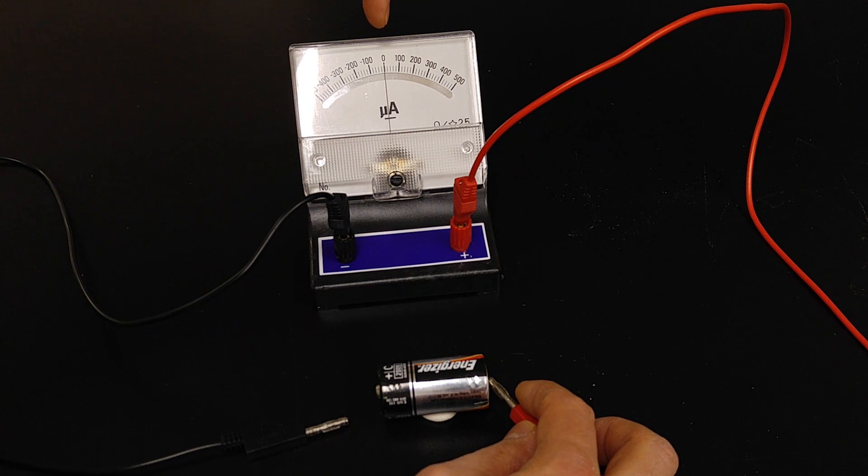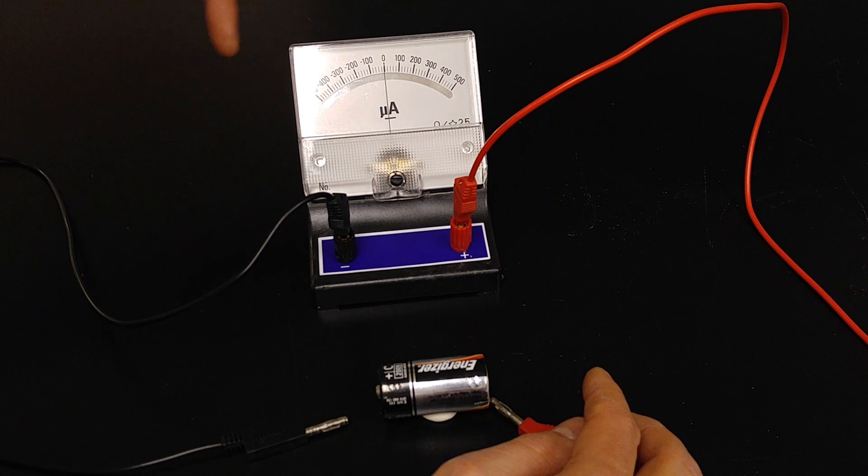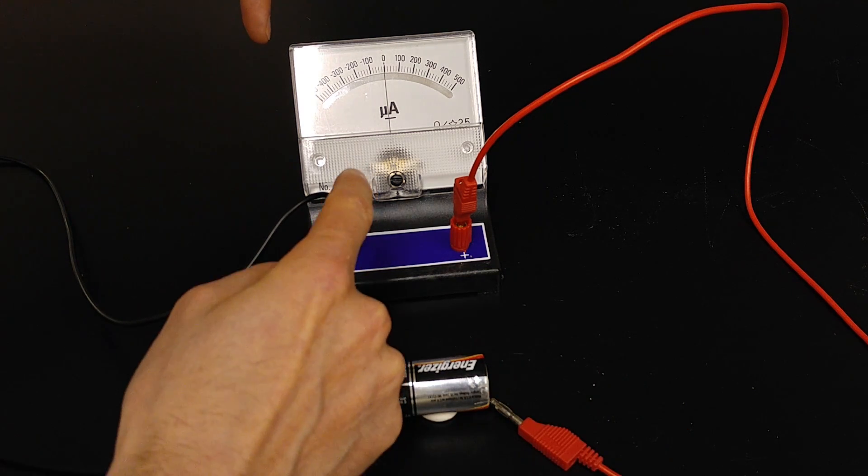We can see that our galvanometer needle, our ammeter needle, swings to the left, so the needle swings in the direction that the high potential is.